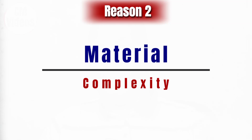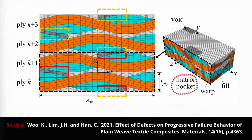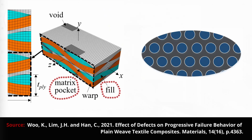The second reason is material complexity. The materials that make up a textile composite can be quite complicated. For example, in a typical 3D reinforced composite there will be a binder, a warp yarn, and a weft yarn, all with different compositions. There will be matrix pockets, and within the binder you have fibers within a yarn, with matrix incorporated within them — all of which makes the material complexity quite difficult to deal with.